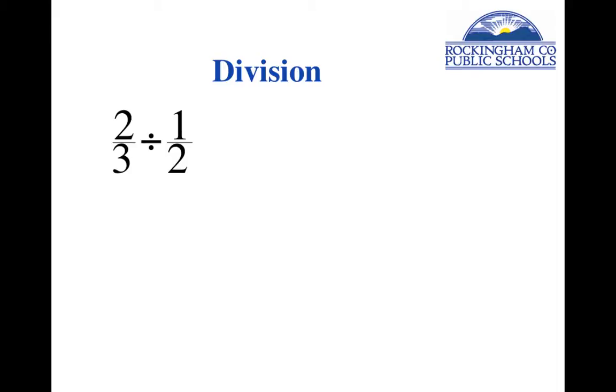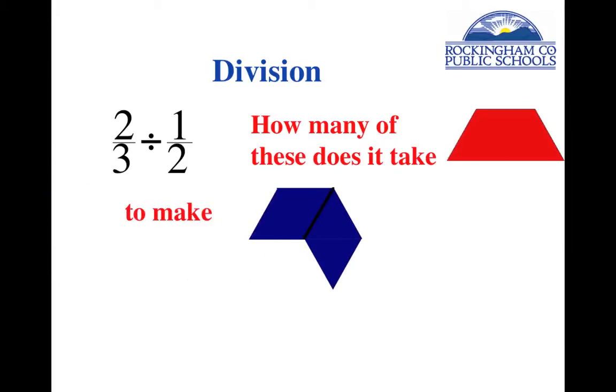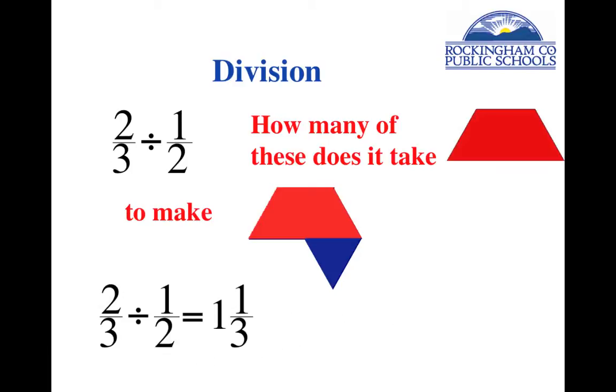How many of those does it take to make that? How many of the divisor, one half, does it take to make the dividend 2/3rds? Well, I think you can see it takes one of them for sure, but then we also need part of another one. What part of the other one do we need? We need a third of the second one. We need one whole one and a third of the next one. So the answer must be one and one third.